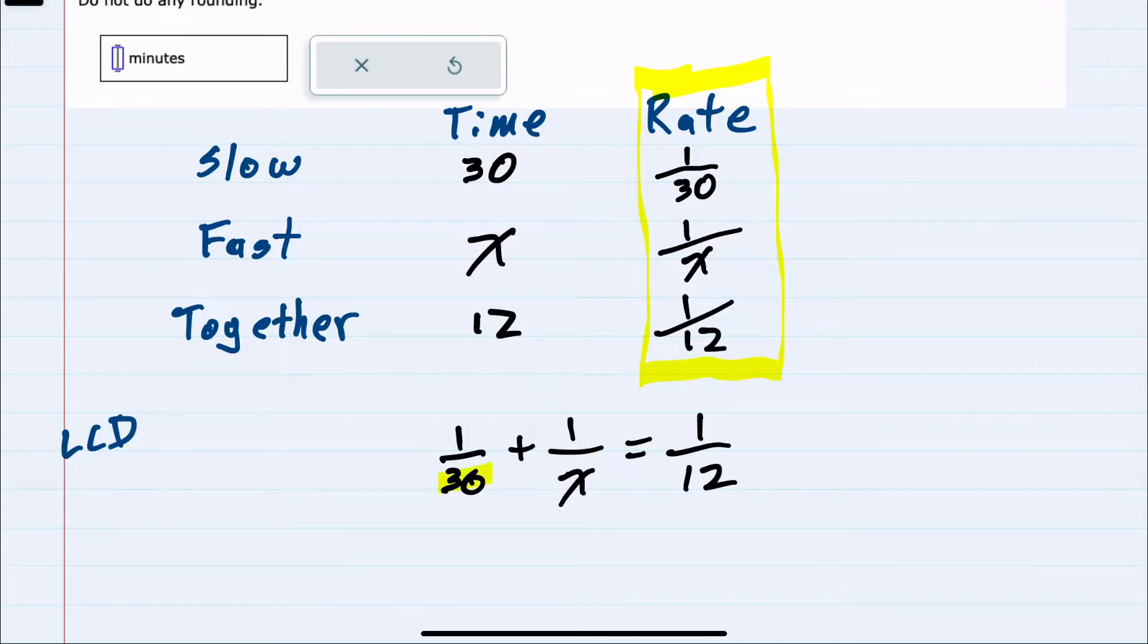And between these denominators, first looking at the numbers 30 and 12, the lowest common denominator there would be 60. And then we need to have an x as well. This is our lowest common denominator.